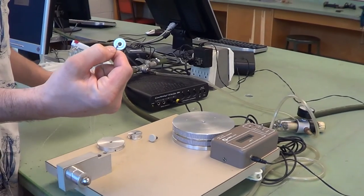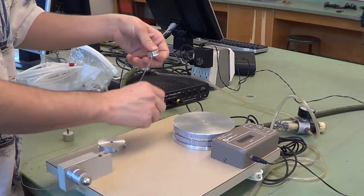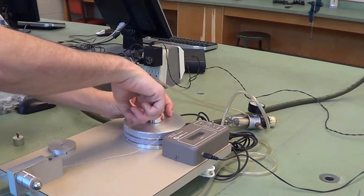On one end of the string is this loop here, which we place underneath the pulley, put the screw through both of them, and screw them into the top of the spindle.